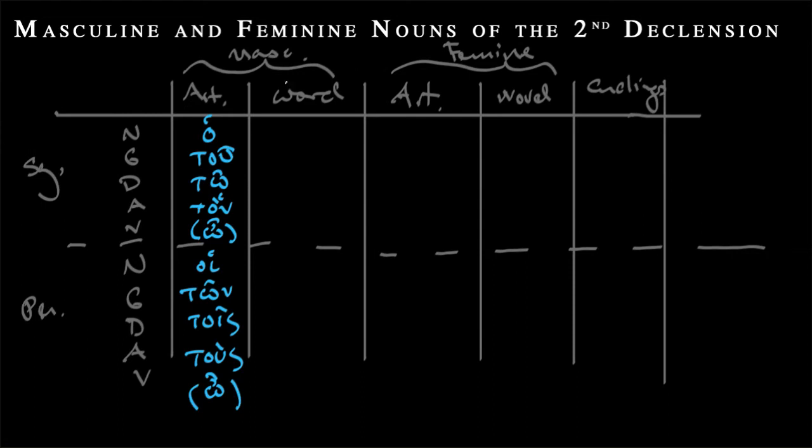And then the word that we're going to use is actually word, logos. This will be familiar to some of you. Big word can mean a lot of things: word, speech, reason, rationale. We're just going to say word for right now. So ho logos is the word, accent on the penult.